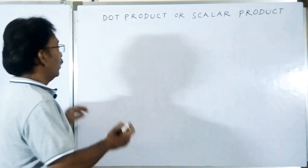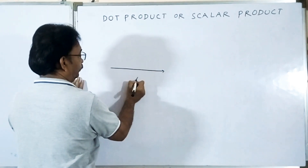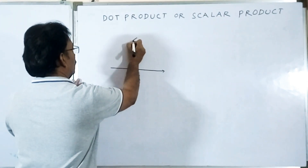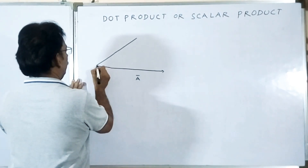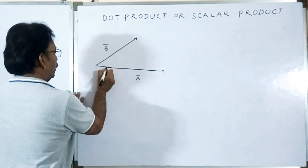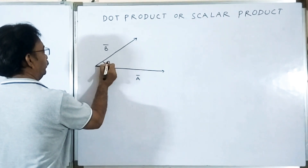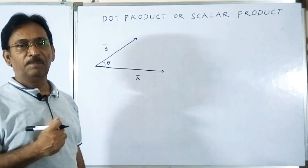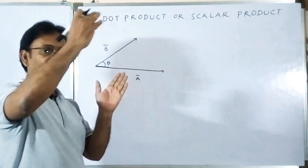To understand this, here we are taking a vector, say vector A, and we have one more vector, say vector B, and we join both. As you learned, the smallest angle is the angle between the two vectors. The dot product is the product of the magnitudes of the two vectors with the cosine of the angle between them, and the result will act along the direction of the first vector.